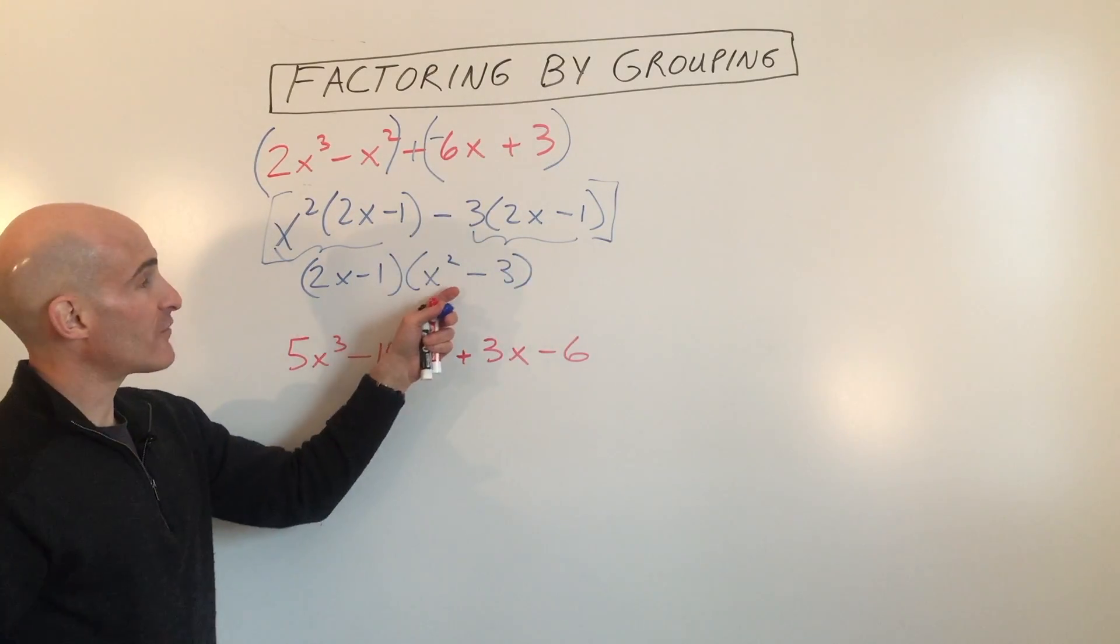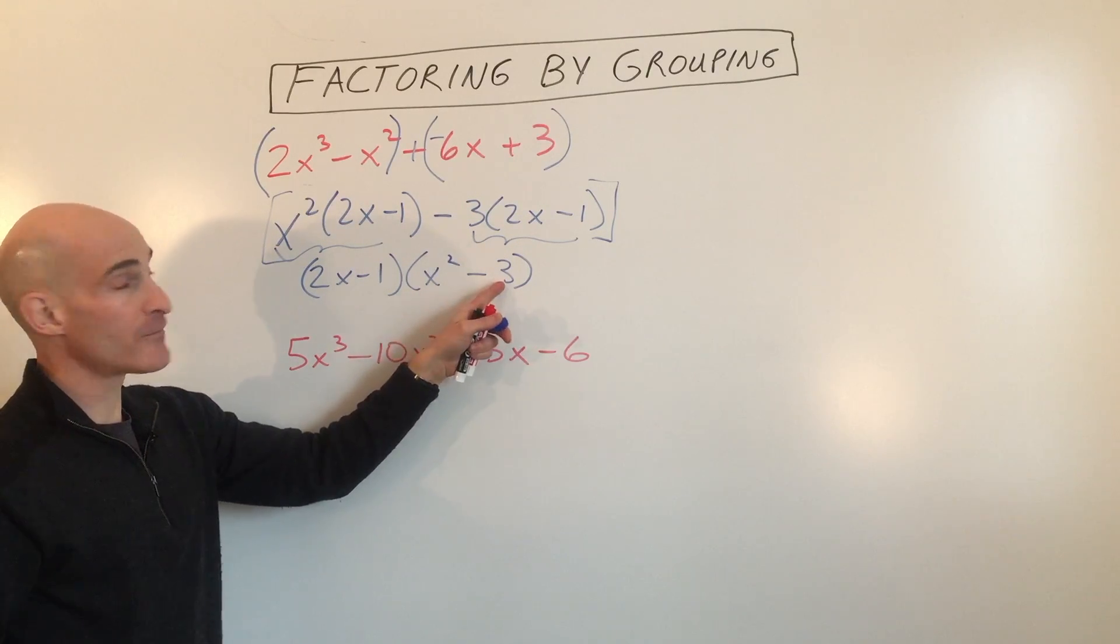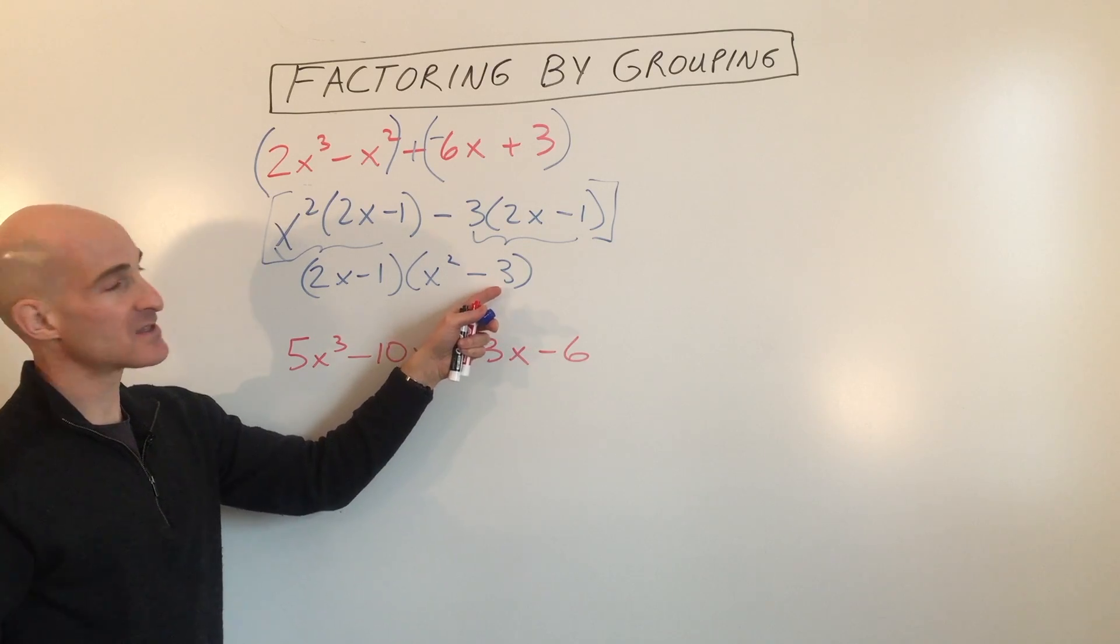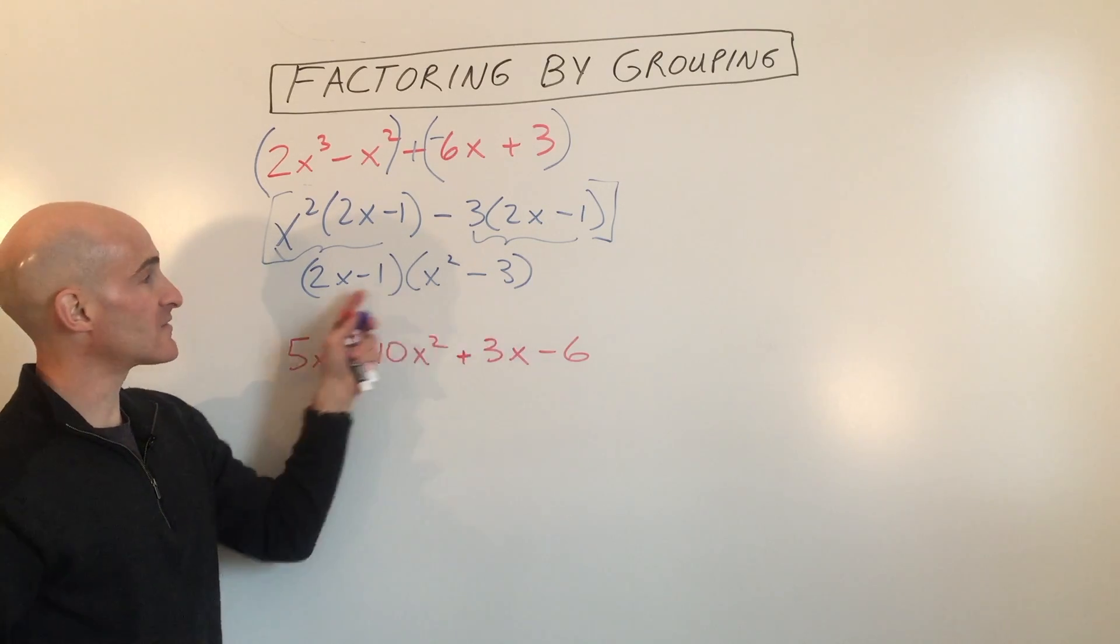Now with factoring, sometimes you have to factor further. If this had been a 4, that's a difference of 2 squares. You can factor that further. But in this case it's a 3. It's not a difference of 2 squares, so that's as far as we can go.